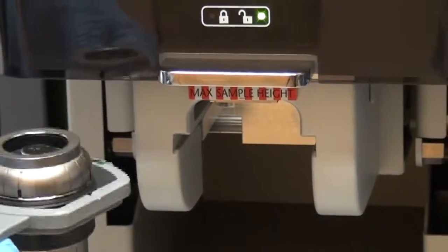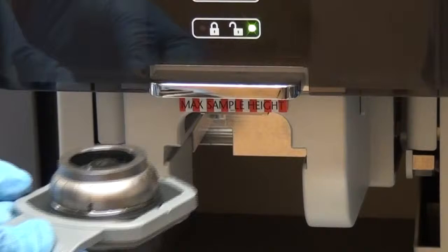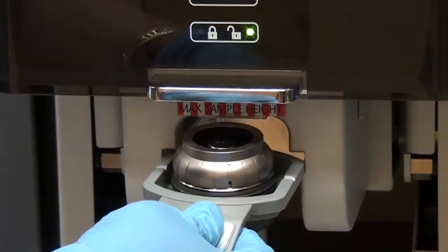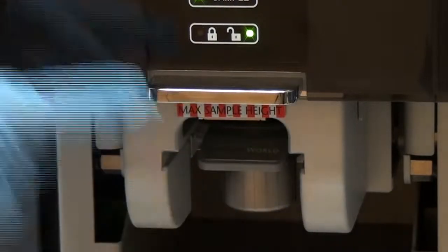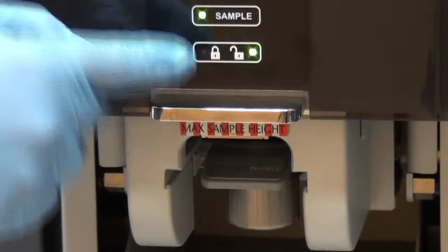The sample holder is inserted into the microscope using the grooves in the slot as the guide. It should be pushed into the slot gently until it stops by the back of the slot.